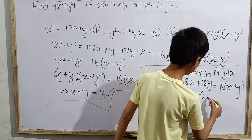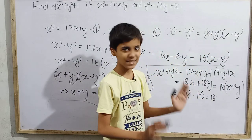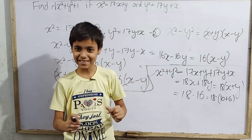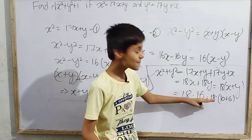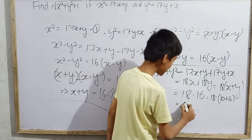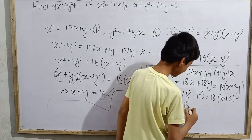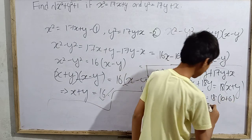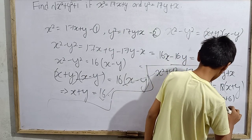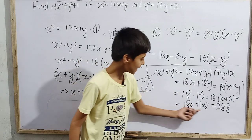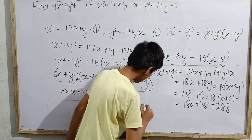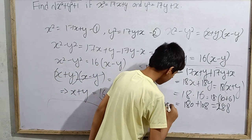To calculate 18 × 16, I break it as 18 × (10 + 6) = 180 + 108 = 288. So x² + y² = 288.